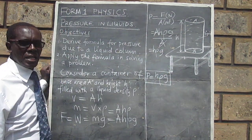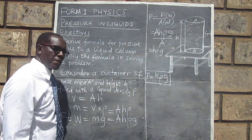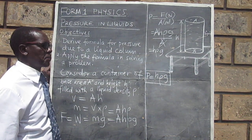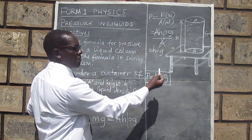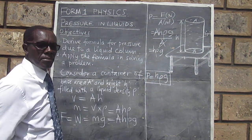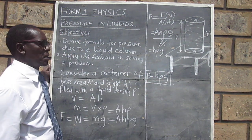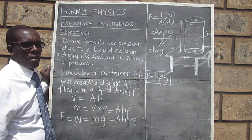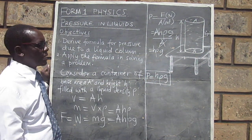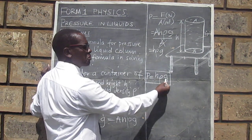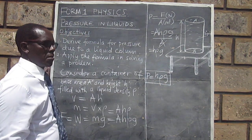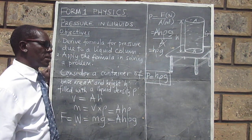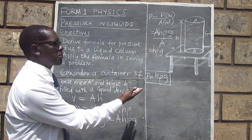From the formula we can see the factors that affect pressure due to a liquid column. First, the height of the liquid column. Second, the density of the liquid. And finally, the acceleration due to gravity at the point where the experiment is being done or where the pressure is being determined.